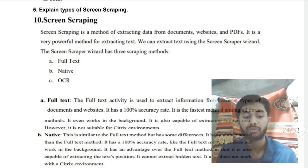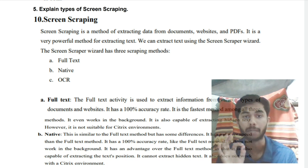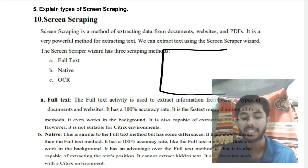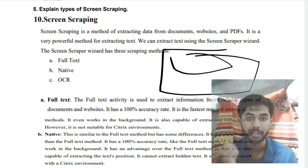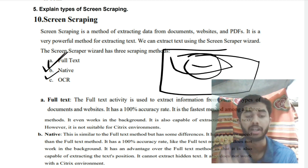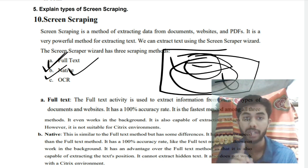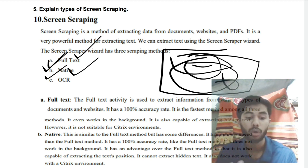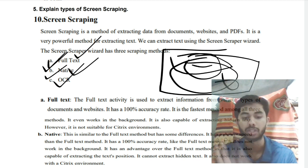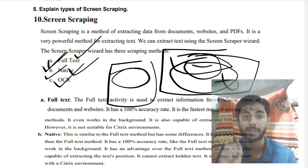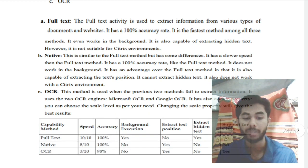The fifth super important question is: explain screen scraping. In screen scraping, you gather text or image data from a screen. There are three methods: Full Text, Native, and OCR. Full Text gathers all text quickly but cannot retrieve text position. Native is slightly slower but also captures the text position on screen, though it cannot gather background text. OCR — Optical Character Recognition — scans and extracts text from images.